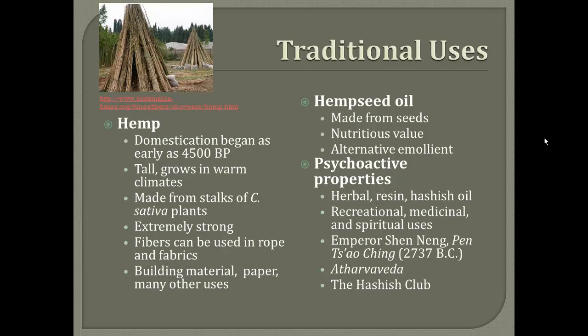One of the first accounts of its medicinal use was by the Emperor Shennong in his book Pen Ts'ao Ching, and he listed it as an anti-inflammatory and painkiller. He also prescribed his patients a hemp elixir for gout and malaria. It was also listed in the Atharva Veda as a treatment for asthma, congestion, fevers, and inflammation.